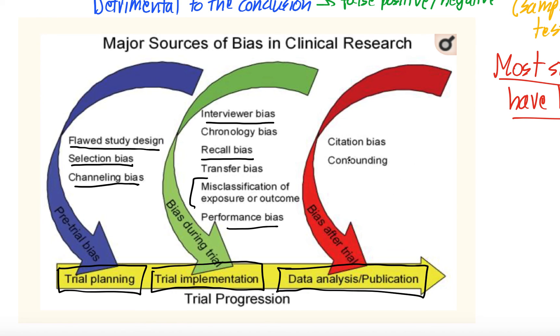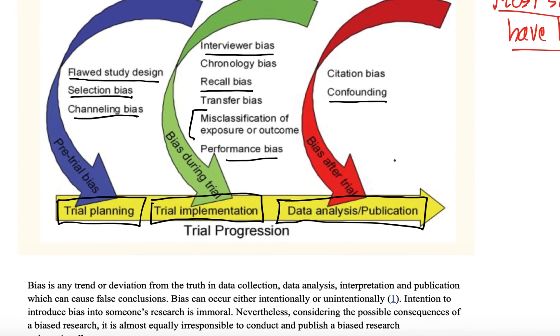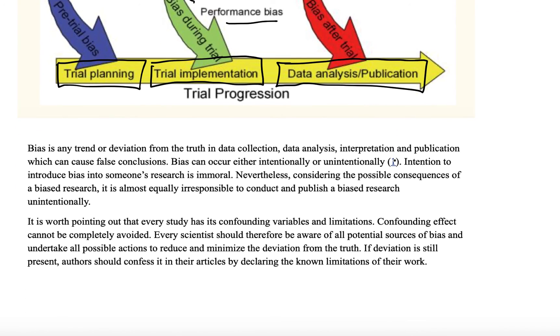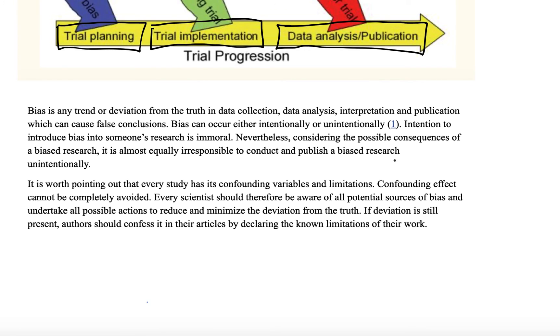And then in analysis and publication, confounding - we talk about confounding variables all the time. Confounding bias is something important. Bias is any trend or deviation from the truth in data collection, data analysis, interpretation, and publication. It can lead to false conclusions, whether those are false positive or false negative. It can be intentional or unintentional.